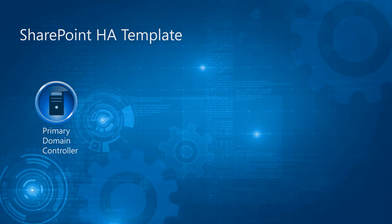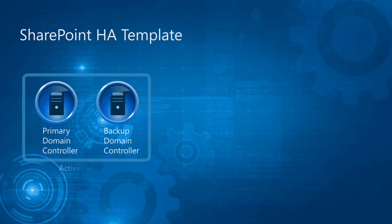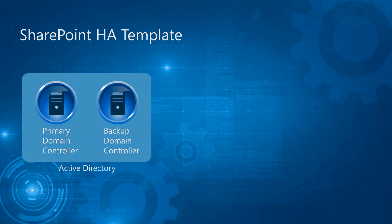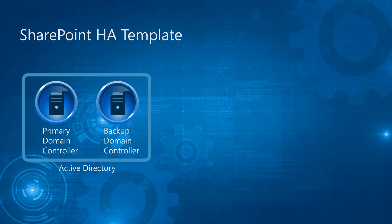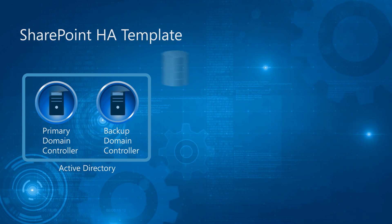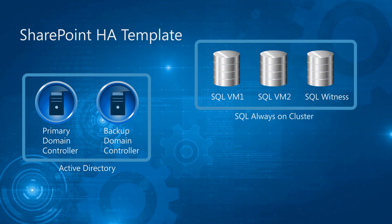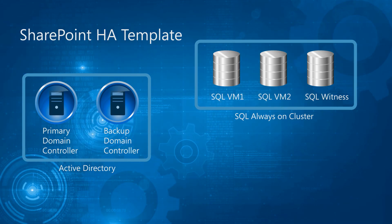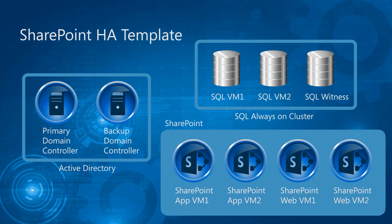And so what this template will end up doing — it'll configure Active Directory, not just once but twice. It'll configure the first one, the primary domain controller, and then it will launch the backup to make sure that you have that HA experience. Once that's fully configured, then we'll move on to SQL to get your back-end data. So we'll have a SQL VM, a second SQL VM, and then the witness to make sure that you can set up this always-on cluster. And once that's deployed, then you go to SharePoint — we'll set up the app server and the web server, and you finally have a full farm with all the users and roles configured.